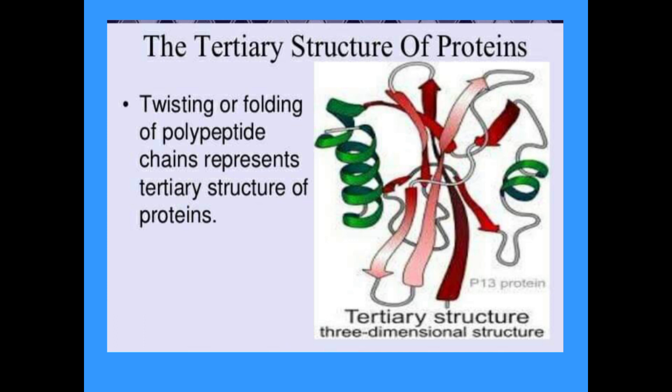The tertiary structure of proteins involves the twisting or folding of polypeptide chains. Usually a polypeptide chain bends and folds upon itself forming a globular shape — this is the protein's tertiary conformation. It is maintained by three types of bonds: ionic bonds, hydrogen bonds, and disulfide bonds. In an aqueous environment, the most stable tertiary conformation has hydrophobic amino acids buried inside while hydrophilic amino acids are on the surface of the molecule.